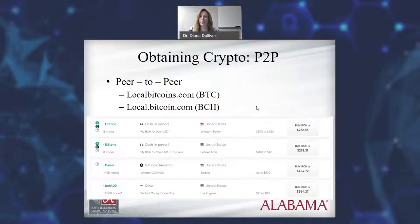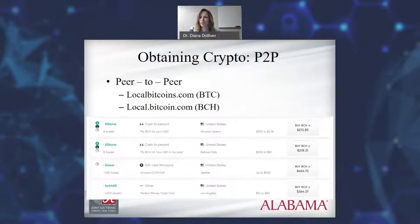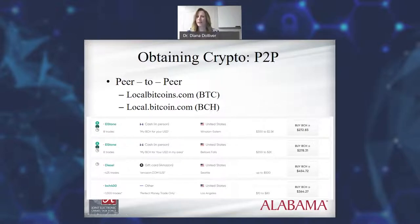There are also peer-to-peer exchanges. Paxful is a huge peer-to-peer exchange where you can go on the website — it operates similarly to Coinbase, except when you're logged into Paxful, instead of paying Coinbase and using Coinbase for transactions, Paxful will set you up with someone else who has Bitcoin. So if you have fiat and you want Bitcoin, it basically just facilitates that transaction between whoever has the Bitcoin amount you're interested in.